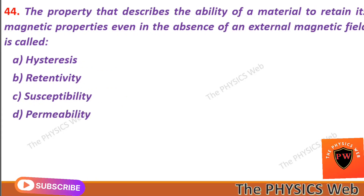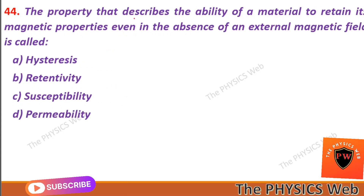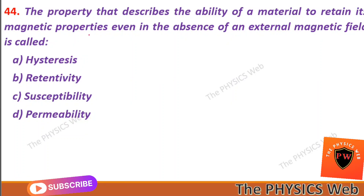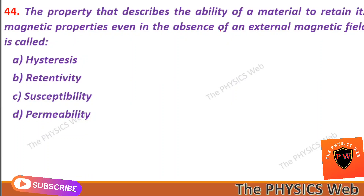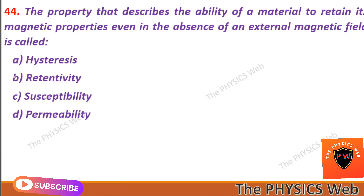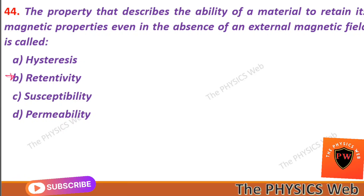Next, question forty-four: the property that describes the ability of a material to retain its magnetic properties even in the absence of an external magnetic field is called retentivity. So B is your correct option.